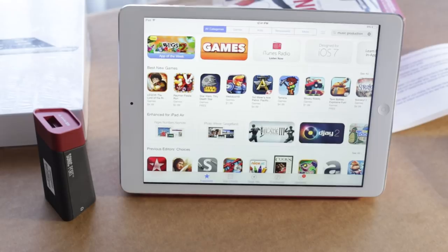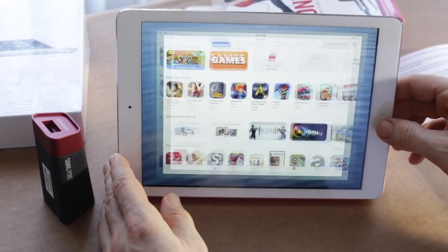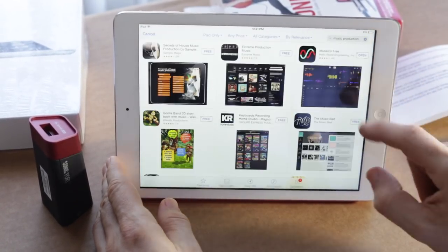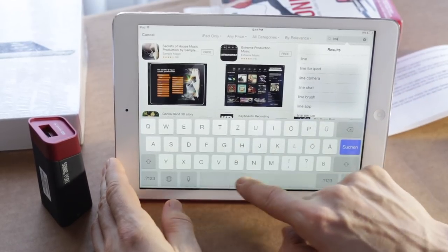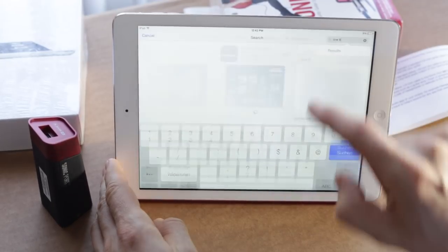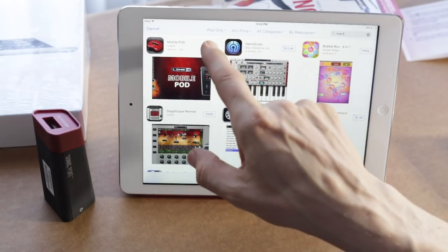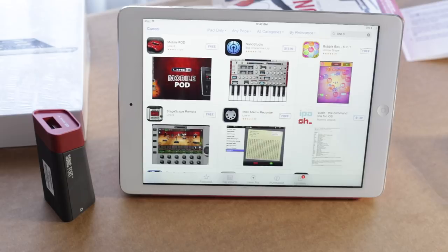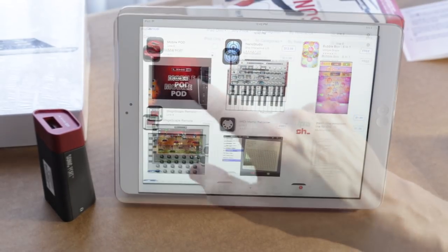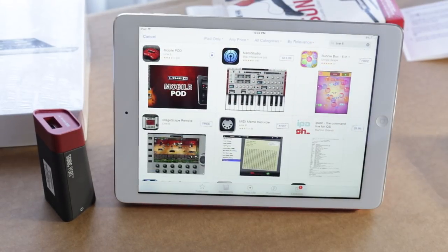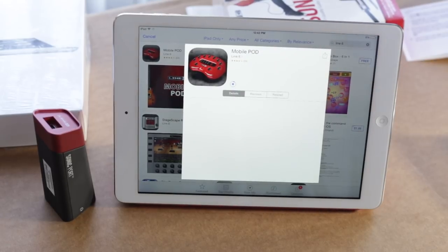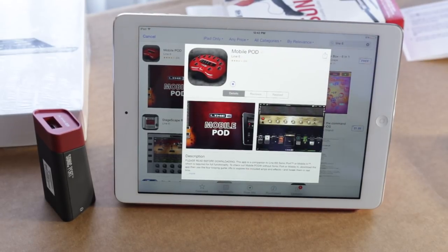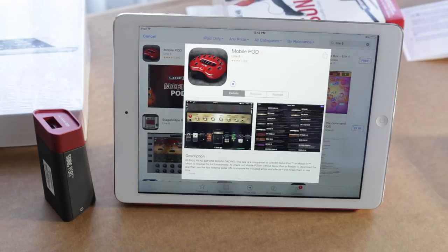All right, so we have to download the mobile app, the Line 6 app. In order to do that, launch the app store, then I guess let's look for Line 6. That is the mobile POD app, we're going to download that, install it. So downloading the app, in the meantime I'm going to get, let's see what it tells us about the app now. See that, sounds looks very cool, I'm very excited about testing this out.